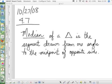The median of a triangle is the segment drawn from one angle to the midpoint of the opposite side. How many angles are in a triangle? Three. How many opposite sides are there? Three. How many medians do you think there are? Three. Very good. There are three medians in every triangle.